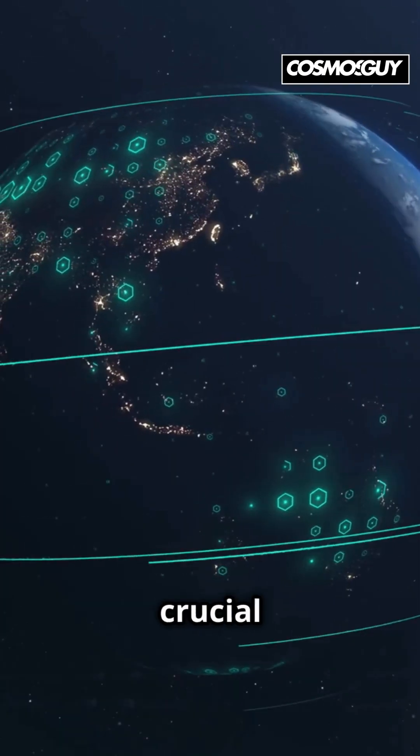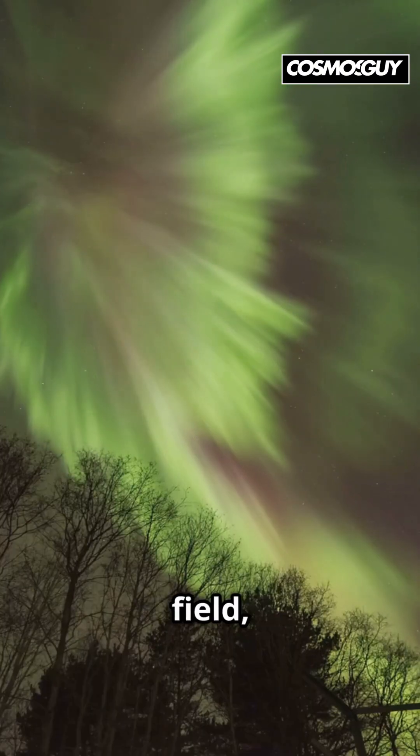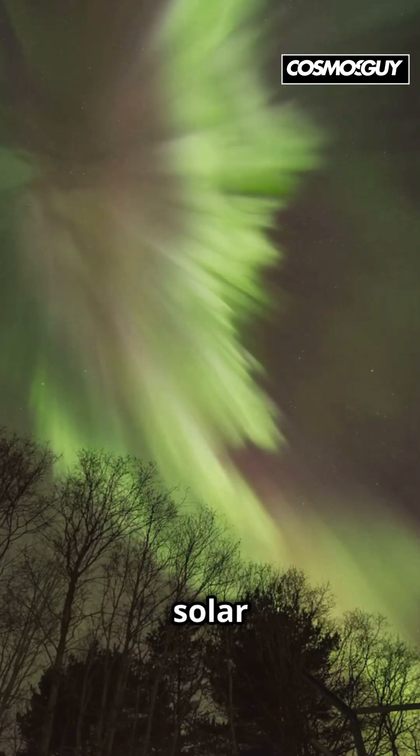The inner core is crucial for generating Earth's magnetic field, which protects us from harmful solar radiation.